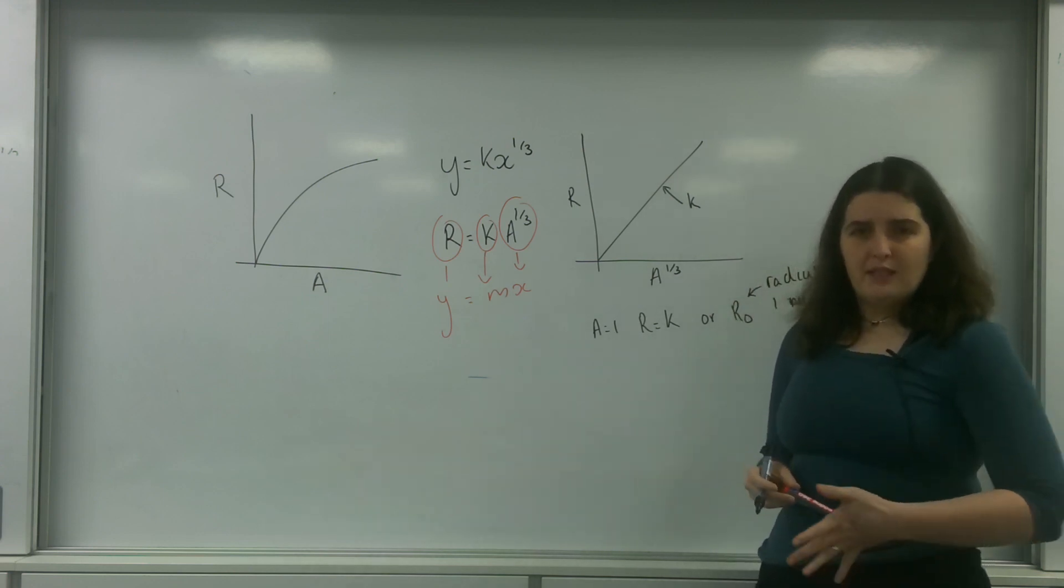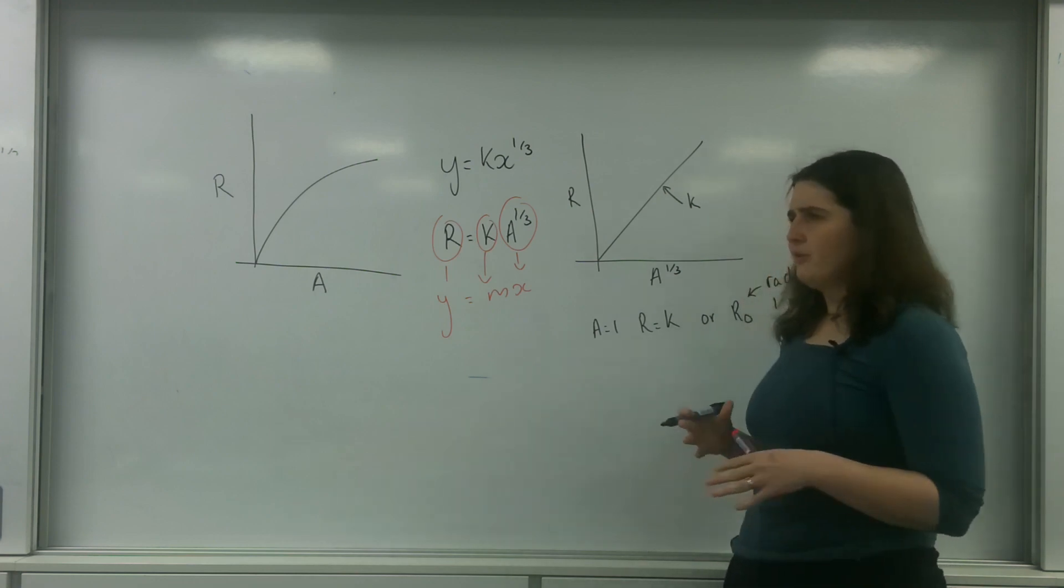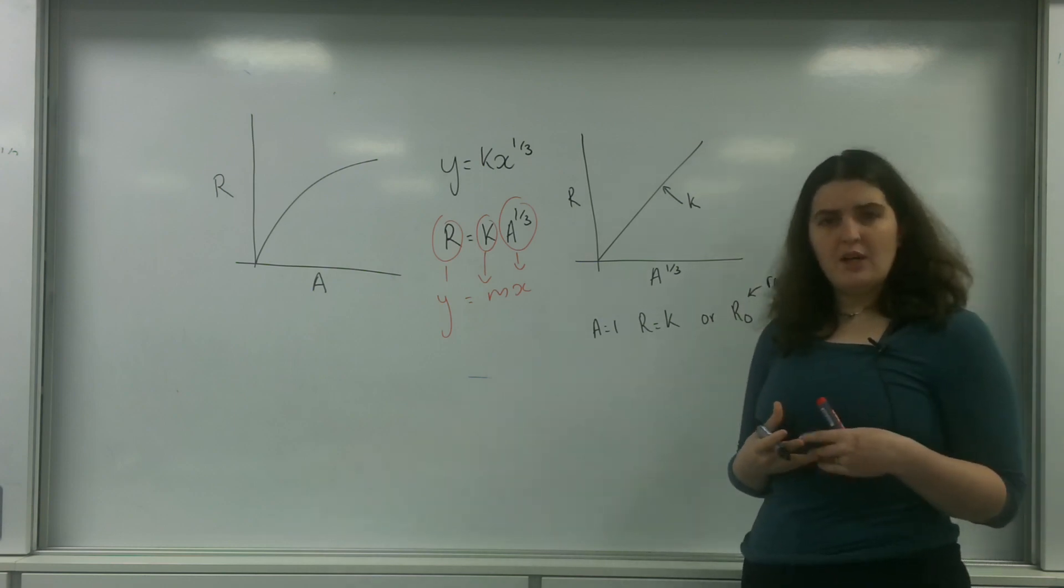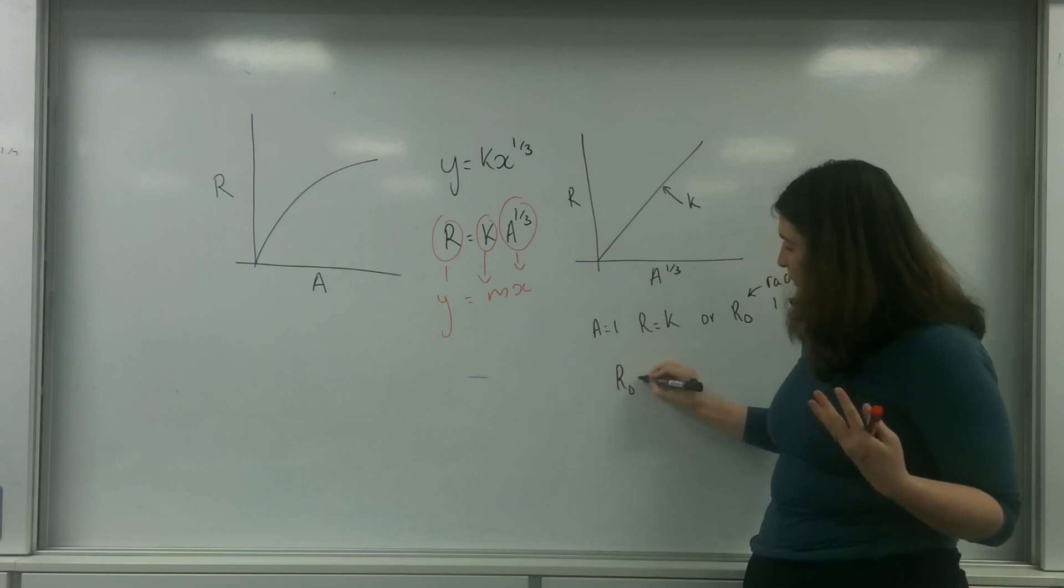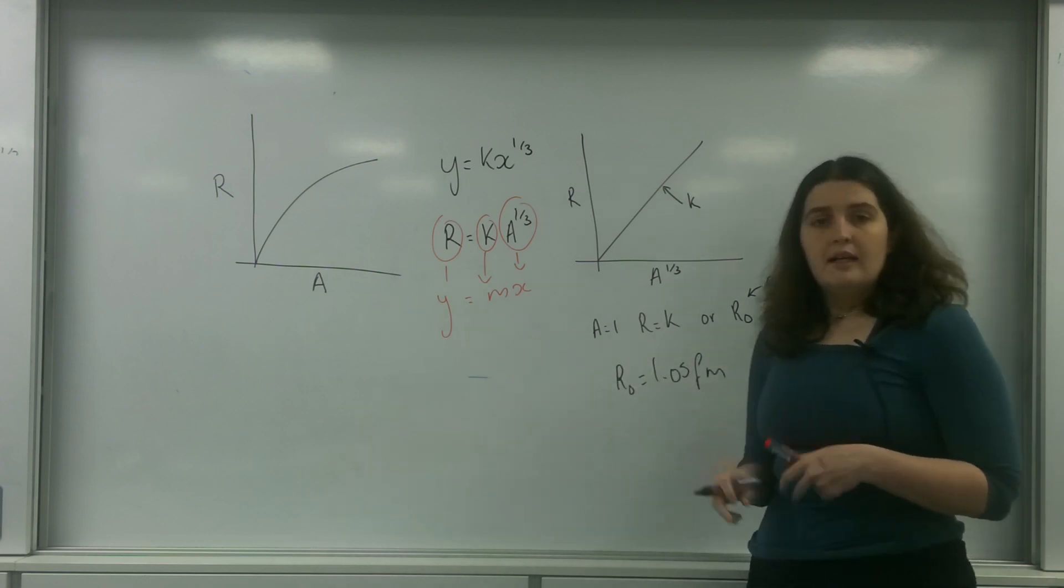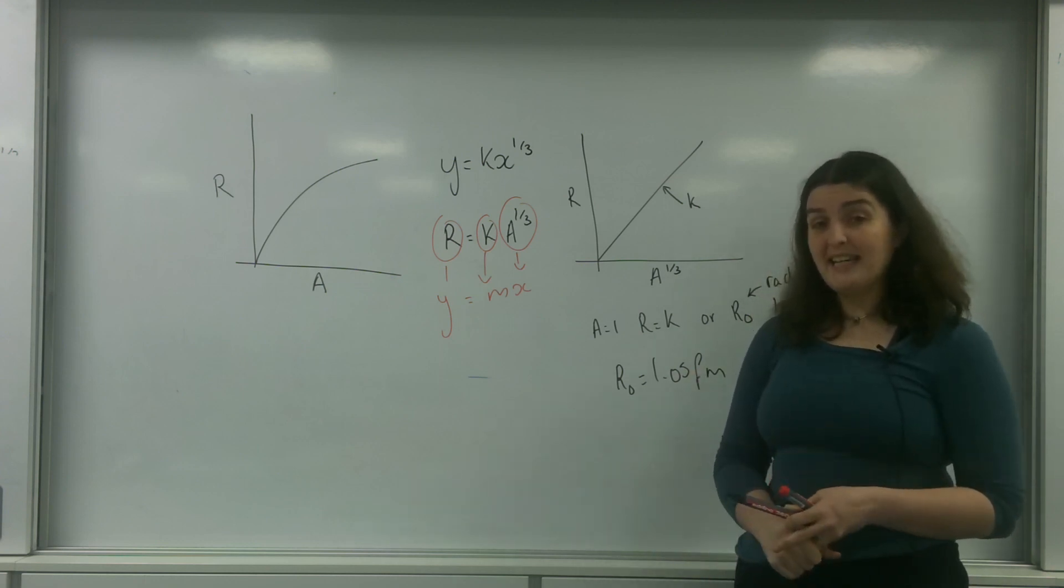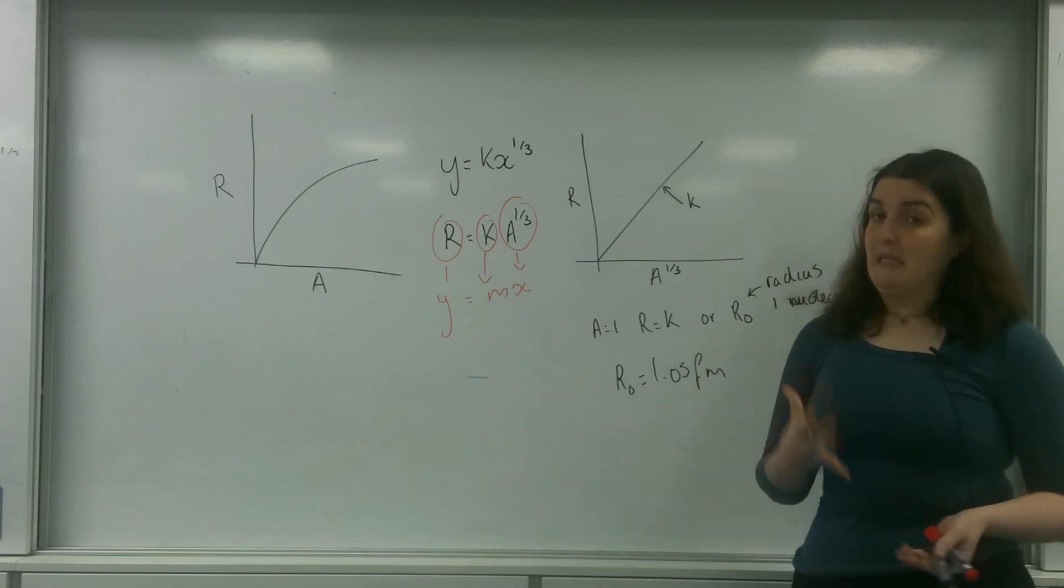Now the values for this change all the time, and the different kinds of questions you may be asked depend on what they really want. To give you an idea of the value, an approximate one that's been seen before is 1.05 femtometers. You may be asked to calculate this from a graph or some preliminary data. But you are looking for a value in femtometers.